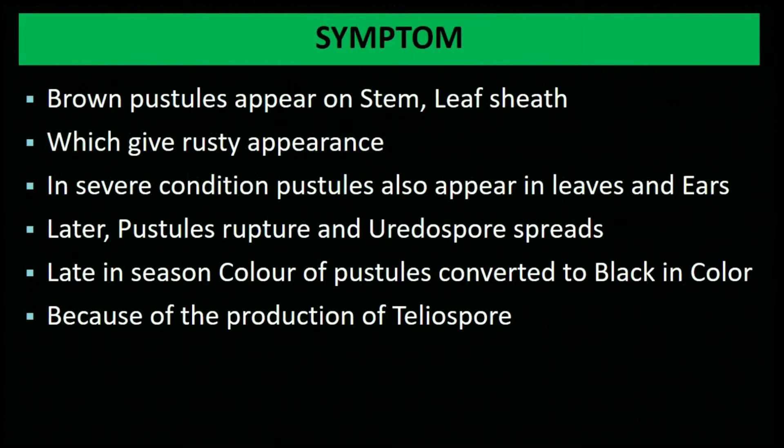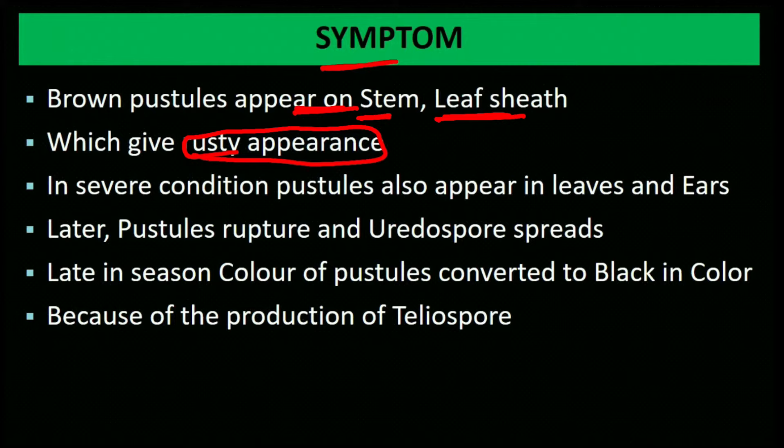Symptoms of black rust or stem rust: Brown pustules appear on the stem and leaf sheath, giving a rusty appearance. In severe condition, pustules also appear on leaves and ears. Later the pustules rupture and uredospores spread. Late in the season the color of pustules converts to black.